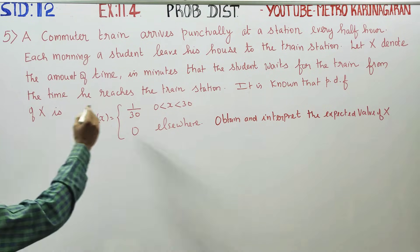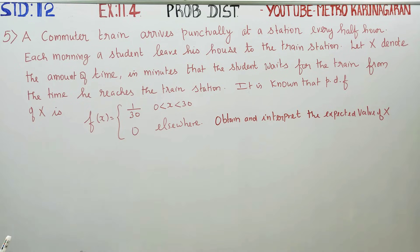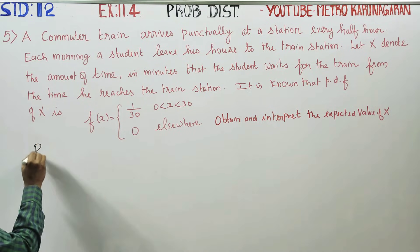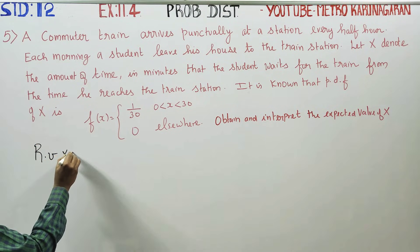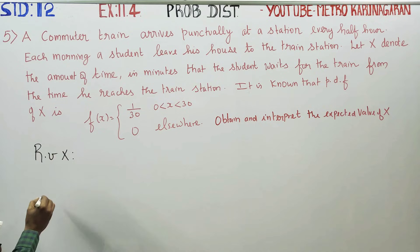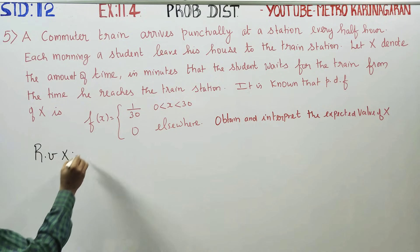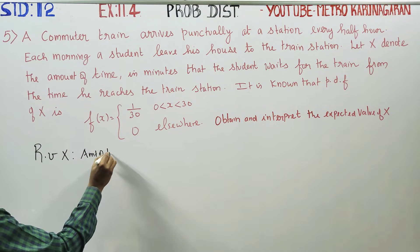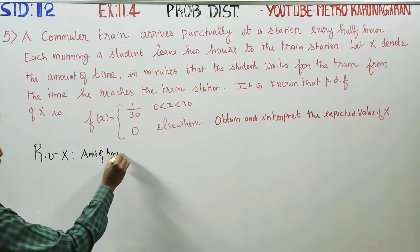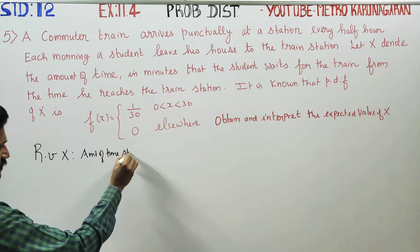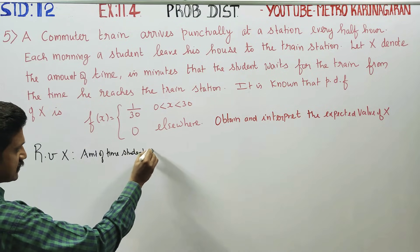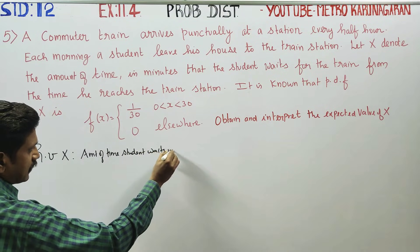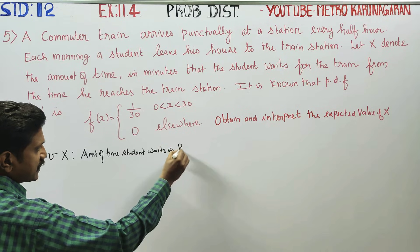From the time he reaches the railway station, the random variable X represents the amount of time the student waits at the railway station, measured in minutes.